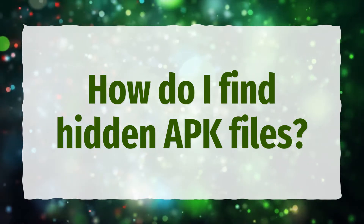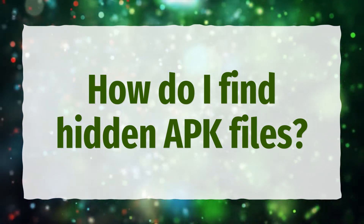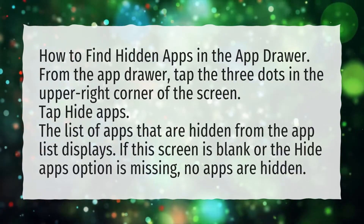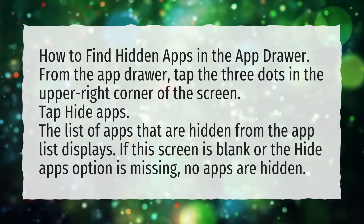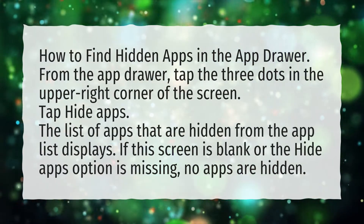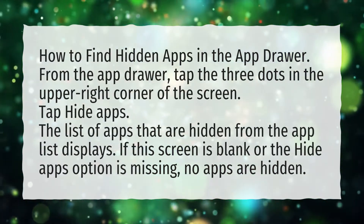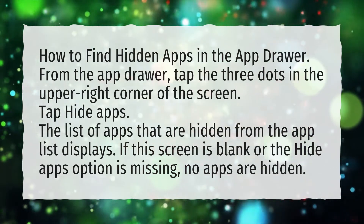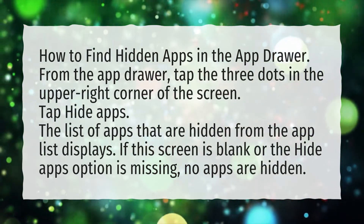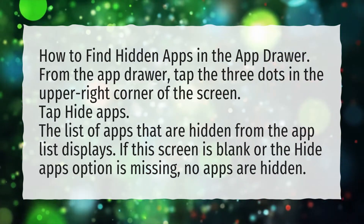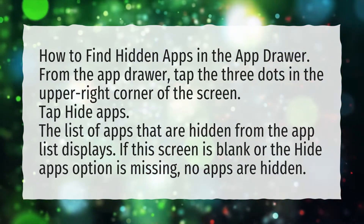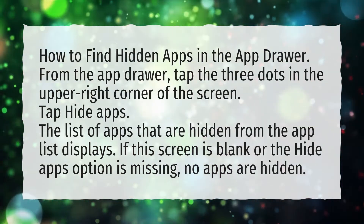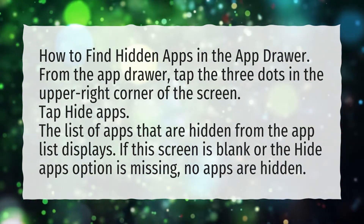How do I find hidden APK files? How to find hidden apps in the app drawer. From the app drawer, tap the three dots in the upper right corner of the screen. Tap hide apps. The list of apps that are hidden from the app list displays. If this screen is blank or the hide apps option is missing, no apps are hidden.